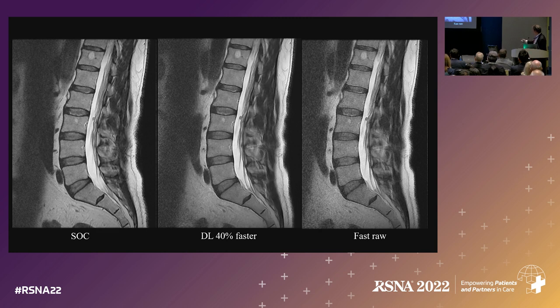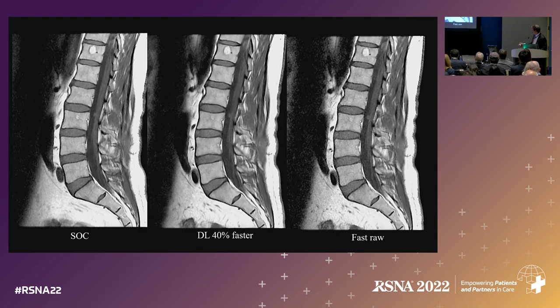This is the routine image. This is what happens if you accelerate it — all that salt and pepper that radiologists love, as well as a decent amount of image corruption. This image processed with SubtleMR gives you an image that very much approximates the standard of care.